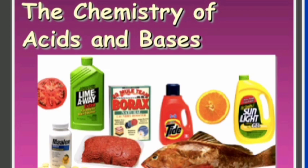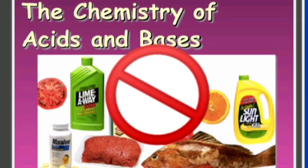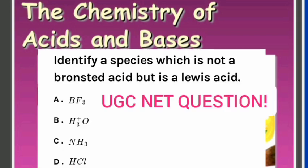Now let's come to the next part of environmental chemistry. We all know that acids are sour in taste and bases are bitter in taste, but is this important from the NET point of view? No. The importance is this question came in environmental science examination: identify the species which is not a Bronsted acid but is a Lewis acid.